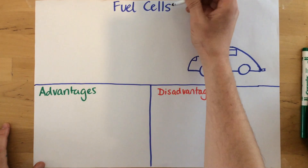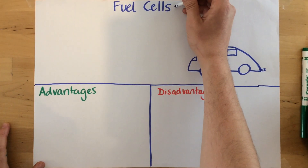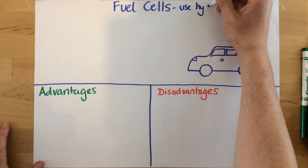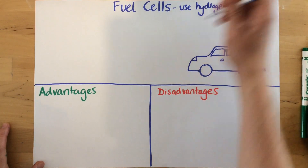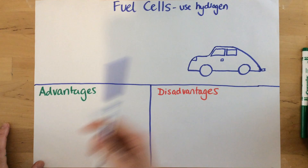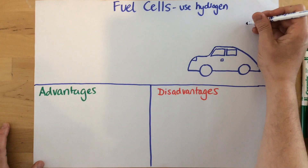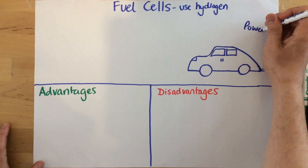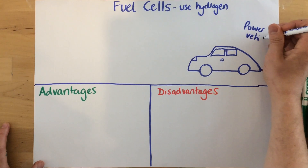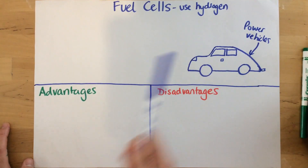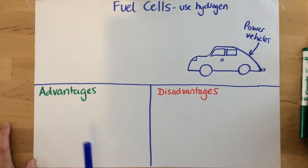To begin with, it's really important to know that fuel cells essentially use hydrogen as their fuel. They could be used to power vehicles — they release energy which can be used to power vehicles.